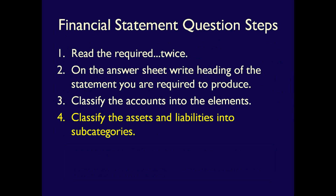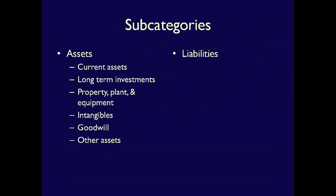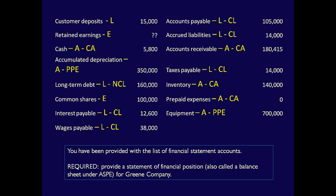Step 4: Classify all the assets and liabilities into their subcategories. For assets, divide them into current assets, long-term investments, property plant and equipment, intangibles, goodwill, and other assets. For liabilities, divide them into current and non-current. Notice I've used short forms for my subclassifications — for instance, CL is current liabilities and PPE is property, plant, and equipment. Again, write the subcategories next to each account name so that you have them for future reference.